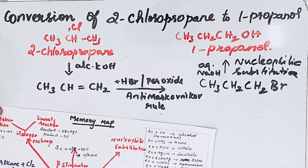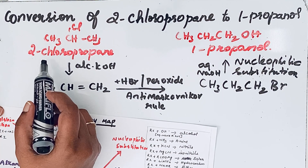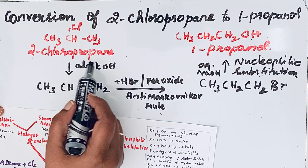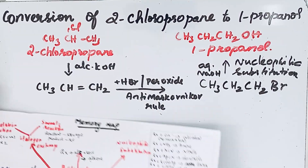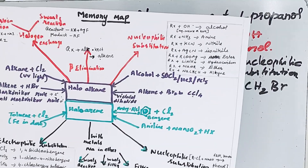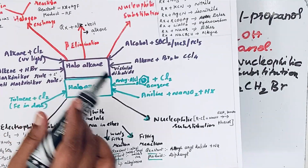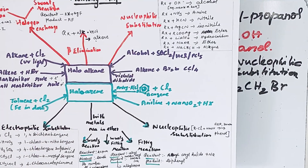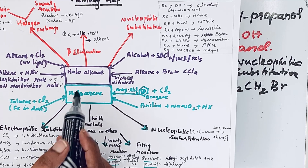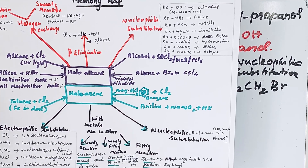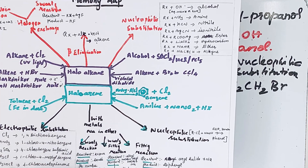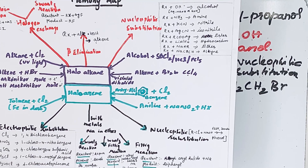So finally we have converted 2-chloropropane to 1-propanol. Using this concept map, you can solve all haloalkane and haloarene related problems very easily.